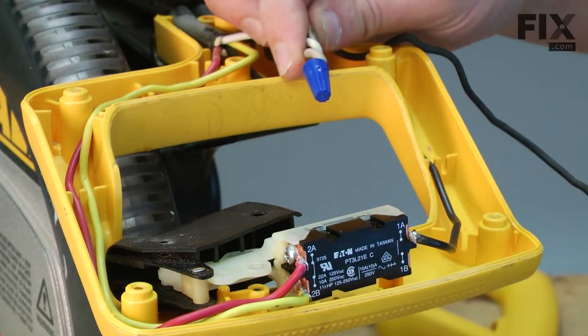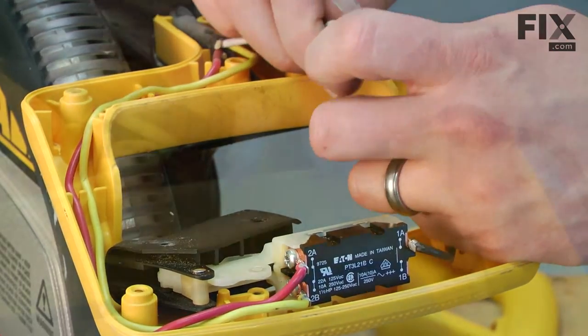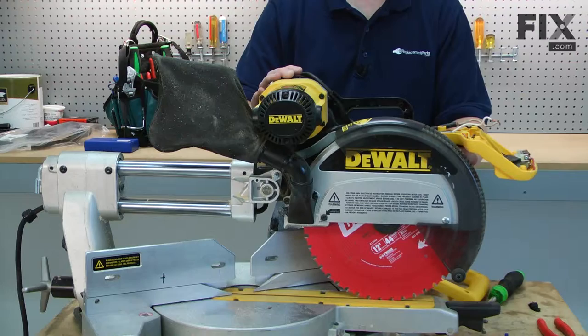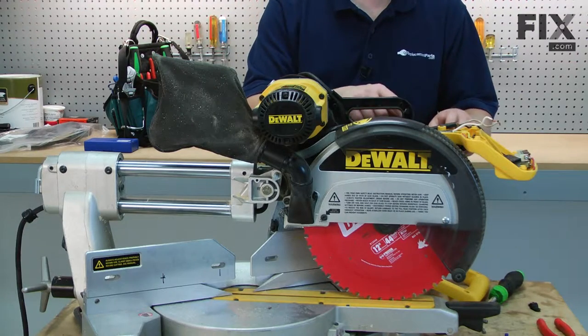Now, I can go ahead and remove the wire nut securing the two white wires. Now, I can go ahead and remove the cord from the saw.